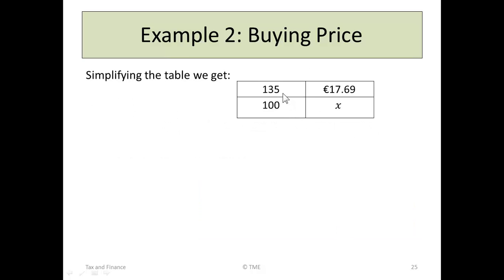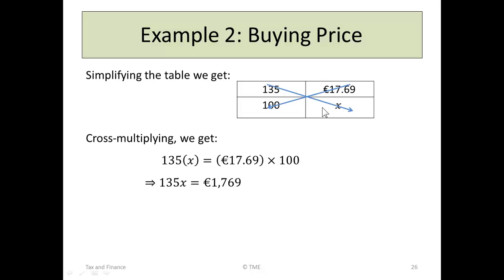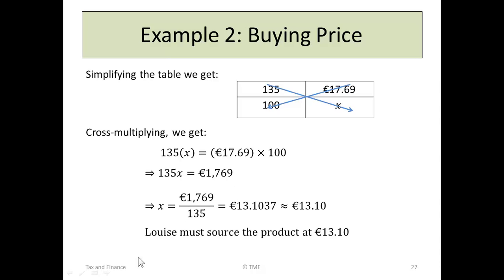We put it in tabular form: 135 is to $17.69 as 100 is to X. Using cross multiplication, 135X equals $17.69 times 100, so X equals $17.69 divided by 135, which gives $13.1037, or to the nearest cent, $13.10. So for Louise to make a profit she must source the product at $13.10 or less. She makes her 35% profit to bring it up to $17.69, adds her VAT, and sells it at $19.99.